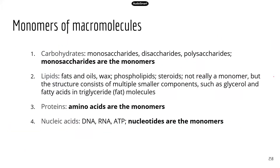Here is a quick summary of the monomers of the four macromolecules we're talking about. For carbohydrates, the monomers are monosaccharides. Mono means one, and saccharide means sugar, so a monosaccharide is one sugar unit. When you have many simple sugar molecules connected and joined, that forms a polymer — so carbohydrates are typically big polymers of monosaccharides.